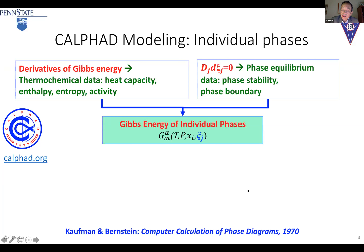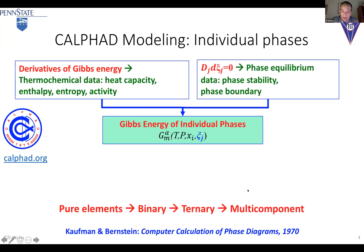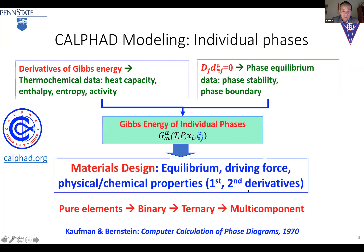Then you get the phase equilibrium data because you refine the parameters. ESPEI takes this data and uses PyCALPHAD to evaluate the parameters. As we all know, the idea starts with pure elements, goes to binary, ternary, and multi-component, and then you do material design — equilibrium driving force, and the physicochemical properties, which are the first and second derivatives of the Gibbs energy function.